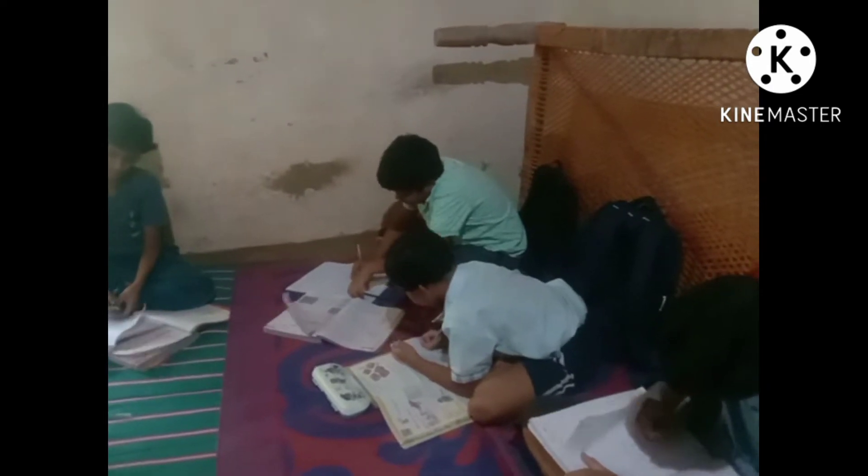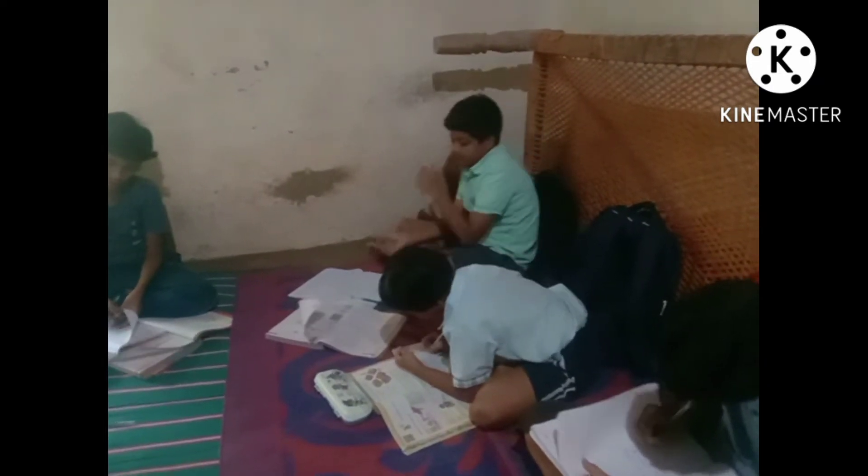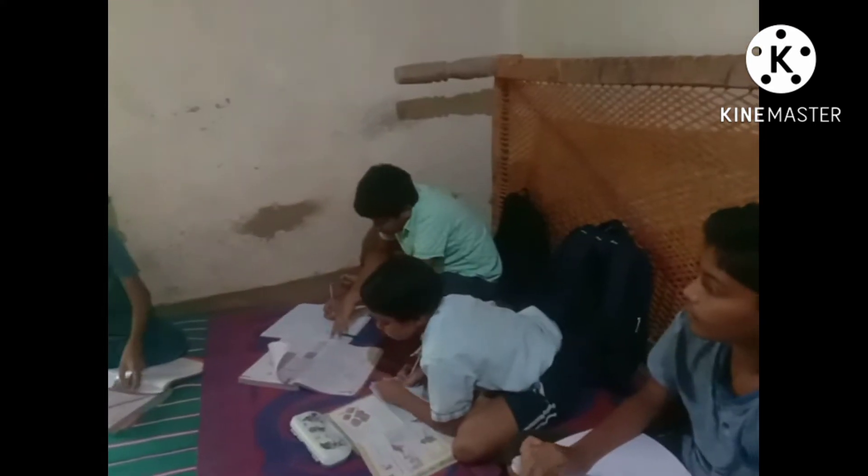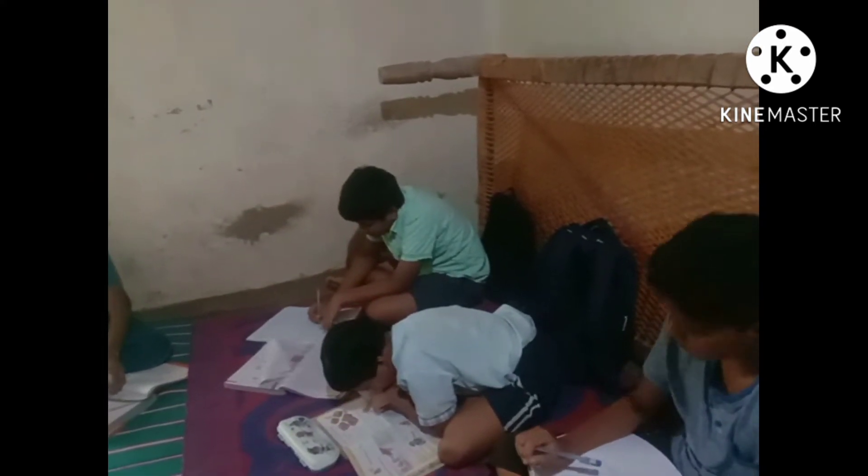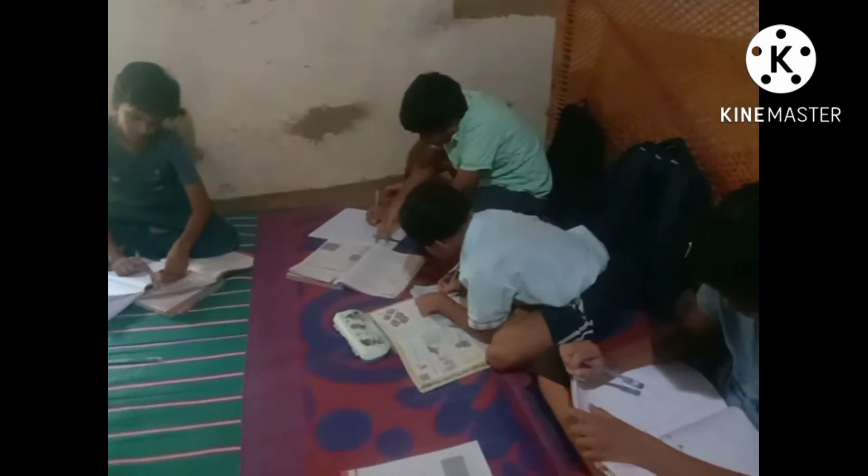Hello, give me the answer. Yes sir, 35 by 32, 5 into 7. Yes sir, 5 into 7, 35 by 32.